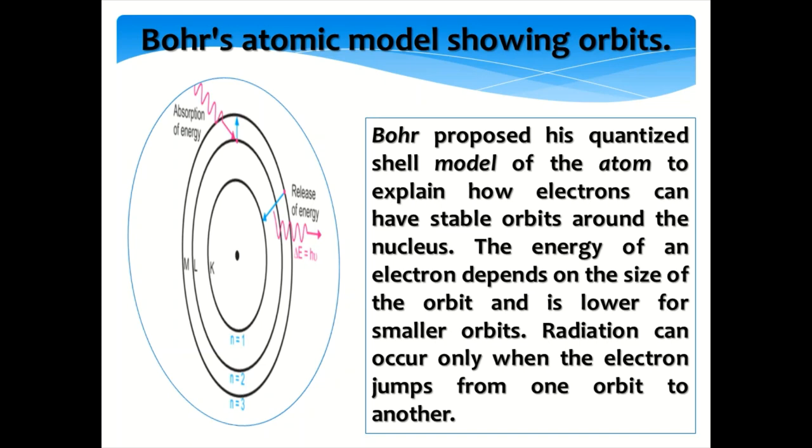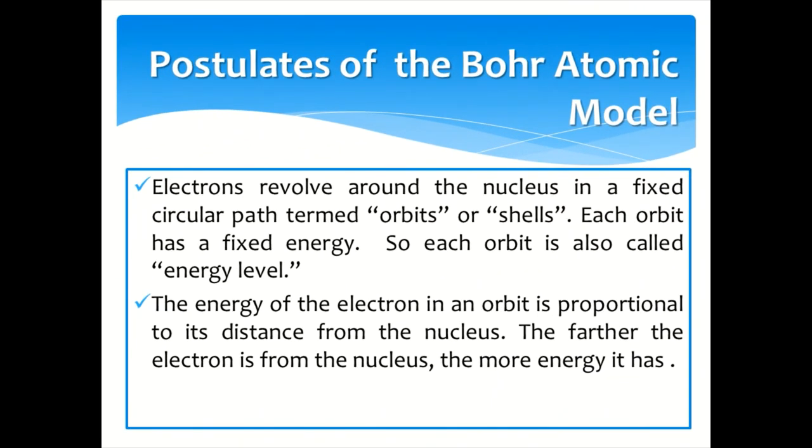Postulates of the Bohr Atomic Model: Electrons revolve around the nucleus in a fixed circular path termed orbits or shells. Each orbit has a fixed energy, so each orbit is also called energy level. The energy of the electron in an orbit is proportional to its distance from the nucleus. The farther the electron is from the nucleus, the more energy it has.